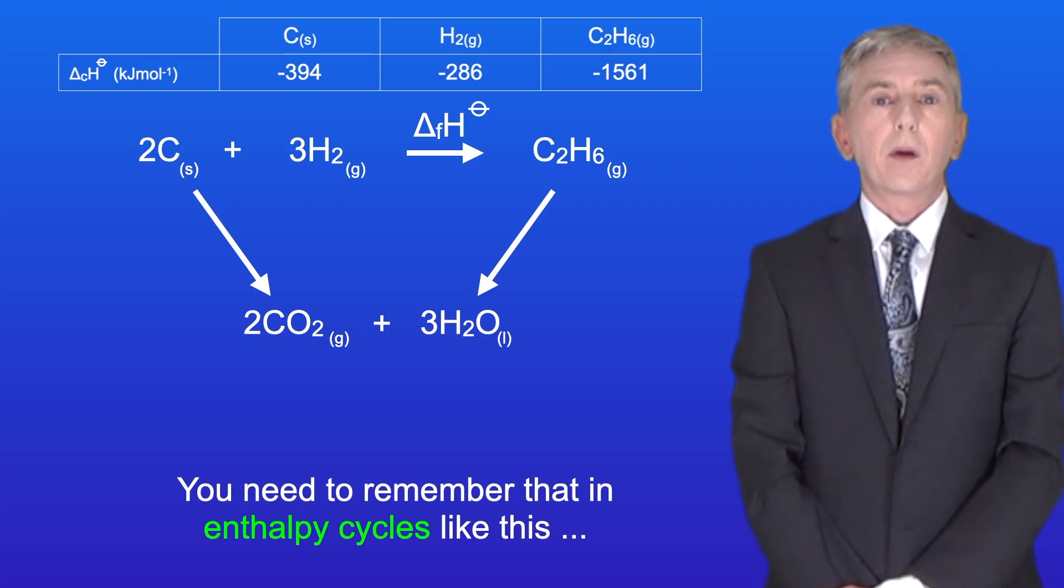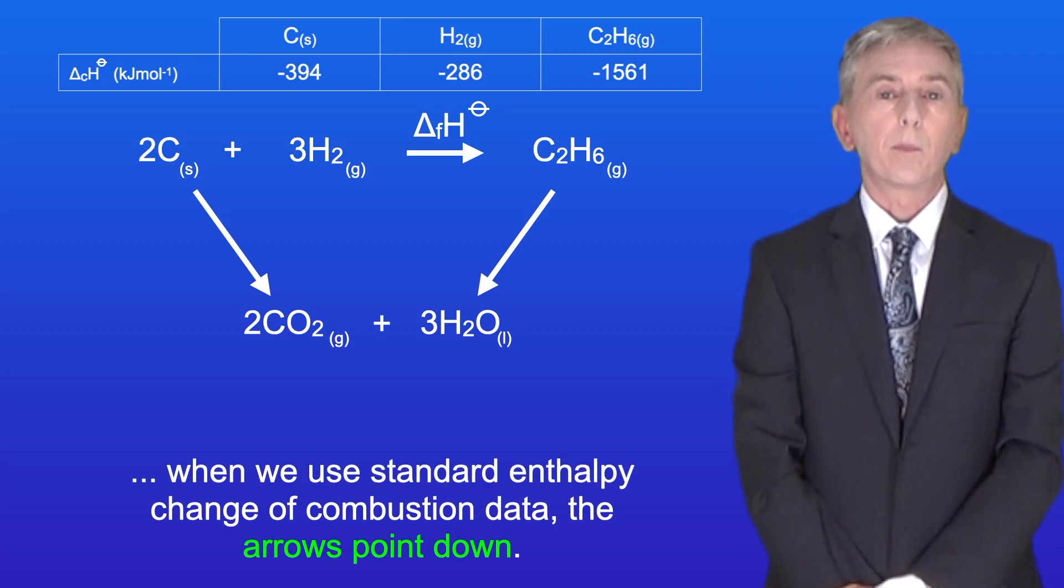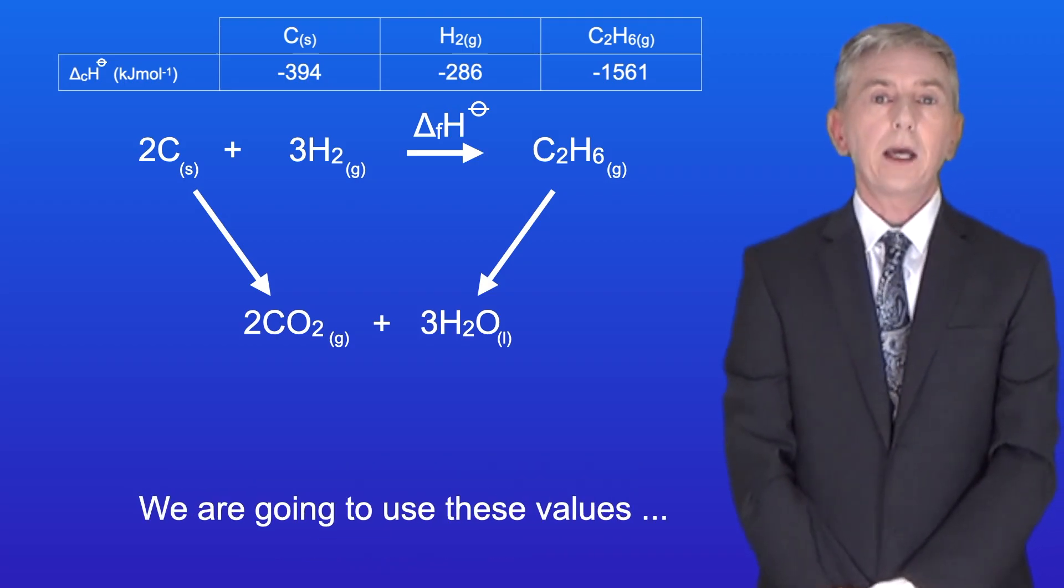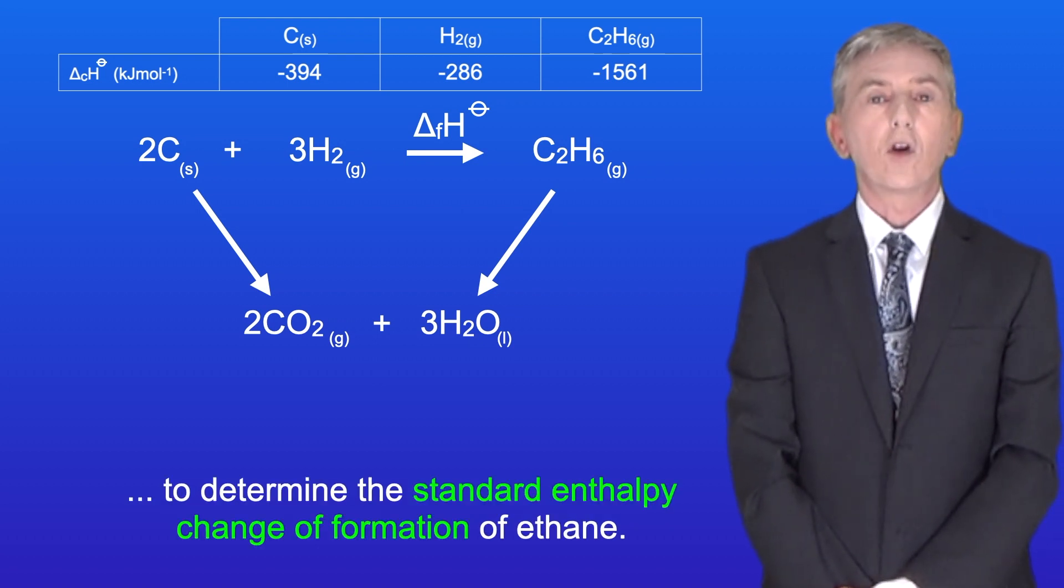You need to remember that in enthalpy cycles like this, when we use standard enthalpy change of combustion data, the arrows point down. So we're going to use these values to determine the standard enthalpy change of formation of ethane.